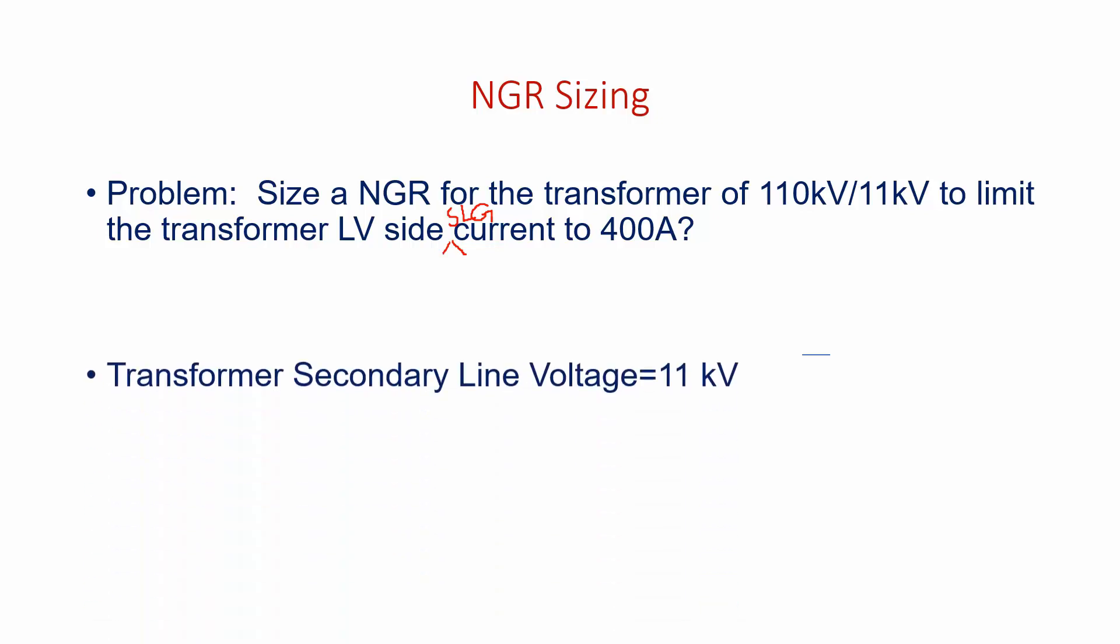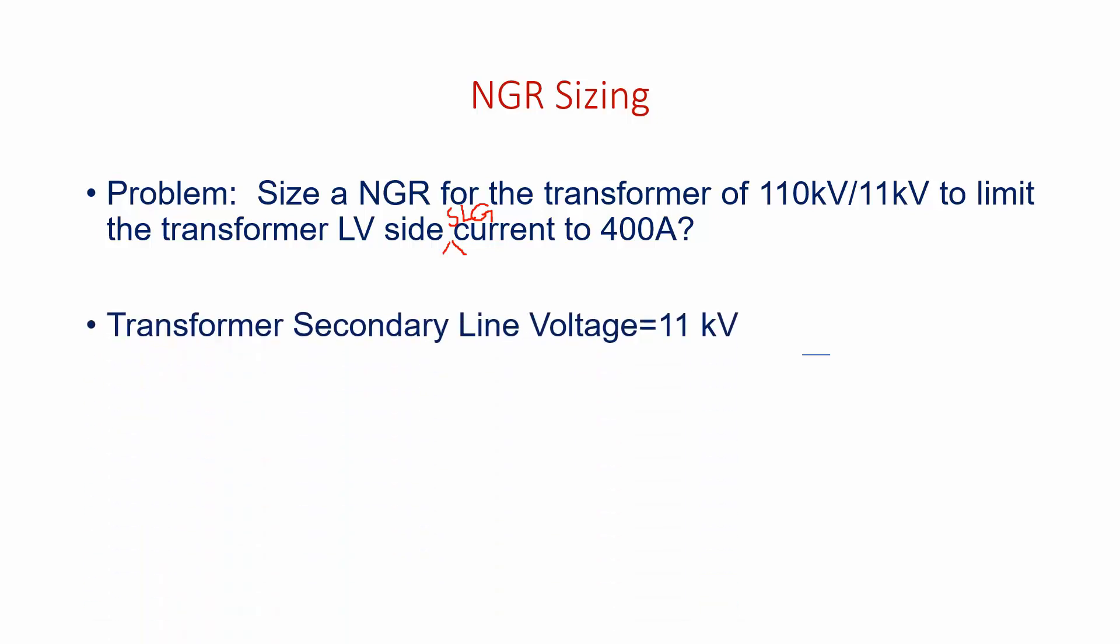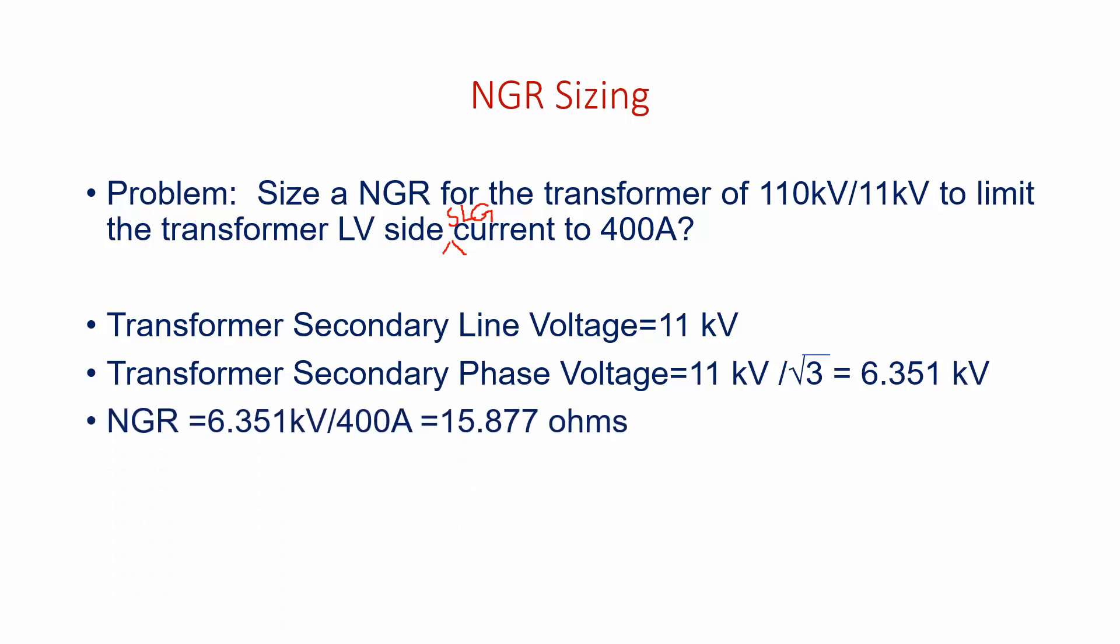The transformer secondary phase voltage is simply calculated by dividing 11 by root 3, so we observe that it's 6.351 kV.